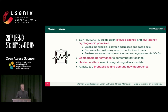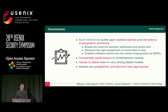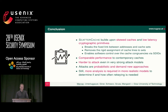To conclude, Scatter Cache is a combination of a skewed cache with low-latency cryptographic primitives. We break the direct link between cache sets and addresses, and enable software to influence the mapping within the cache. We have comparable performance to contemporary caches, especially with the same replacement policy, and it's definitely harder to attack. Still, we need more analysis to understand how this works in a more realistic model and whether re-keying is also needed.